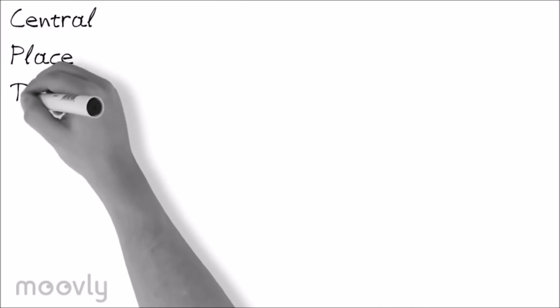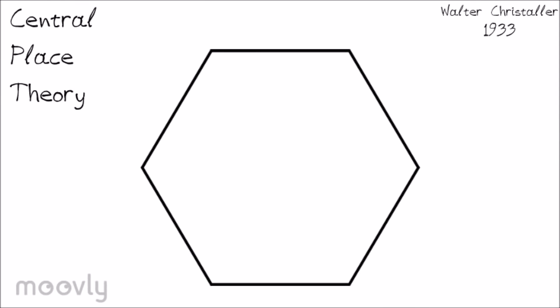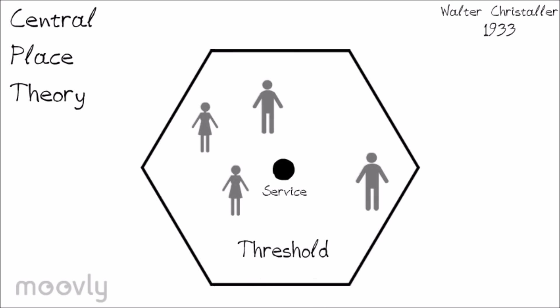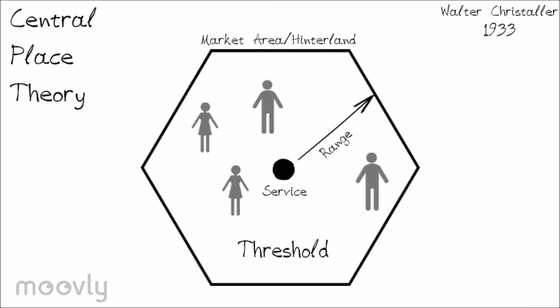The central place theory is a model created by Walter Christaller in 1933. The model is in the shape of a hexagon to ensure no space is left untouched. The central place in the middle is the source of service. The threshold is the number of people needed to support the service. The range is how far a service can stretch out, and the market area or hinterland is the boundary line for the service. Christaller concluded that towns of the same size are evenly spaced because they are centered in congruent market areas, and towns are part of an interdependent system — if a central place is eliminated, the entire system readjusts to fill the gap.